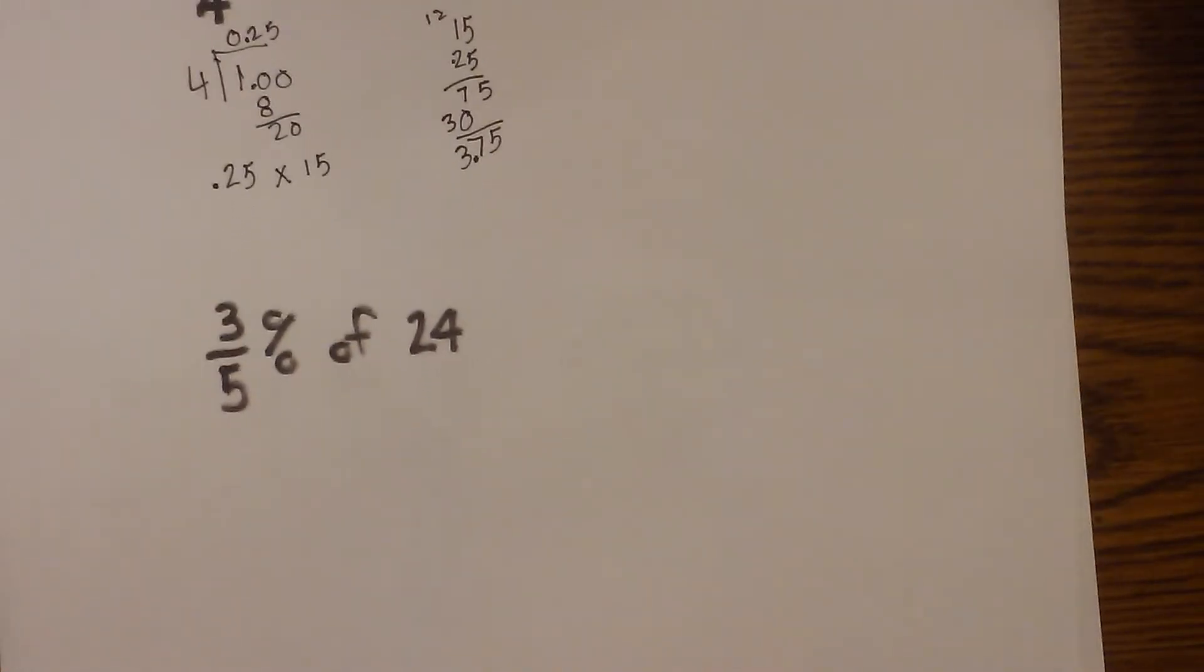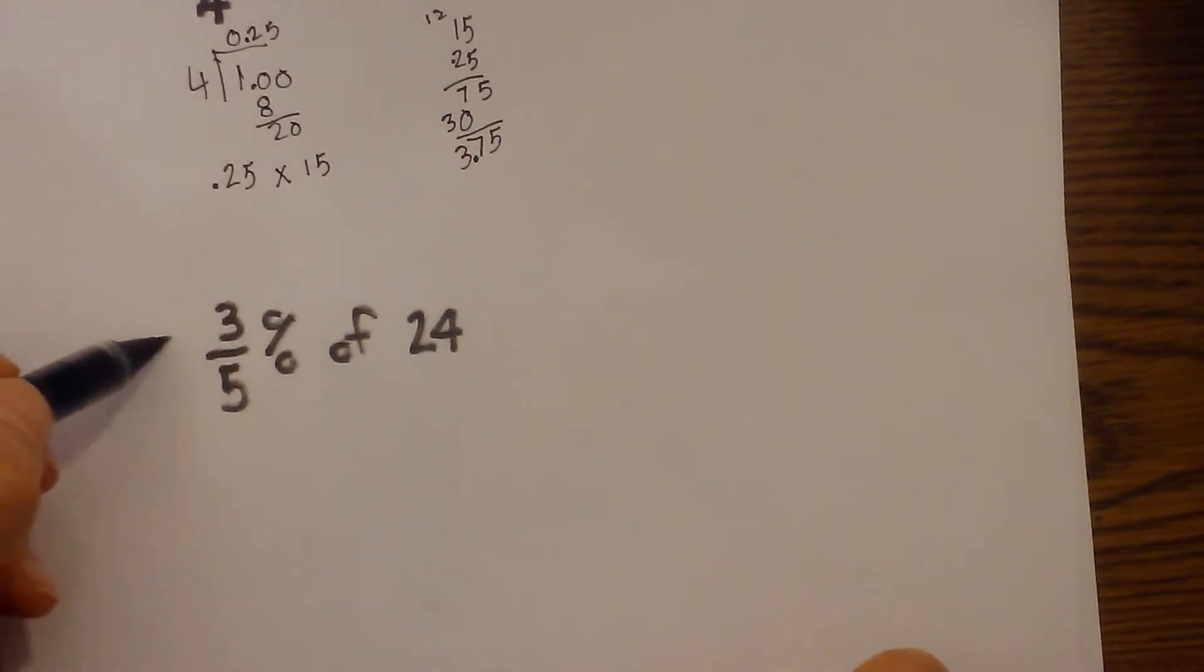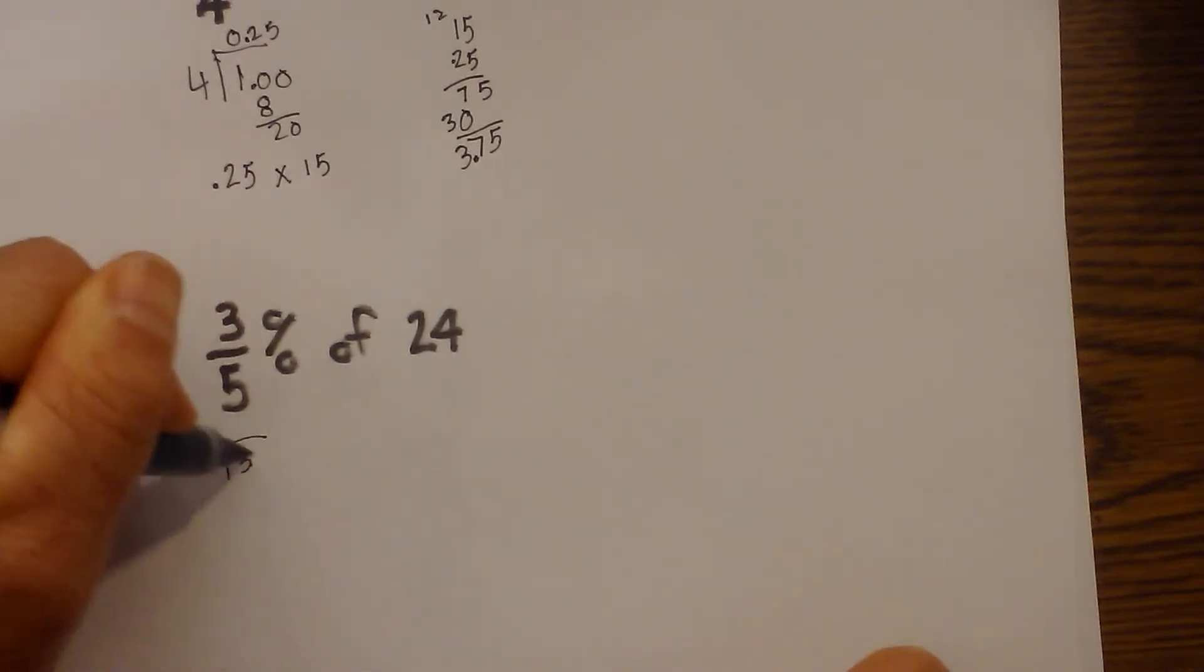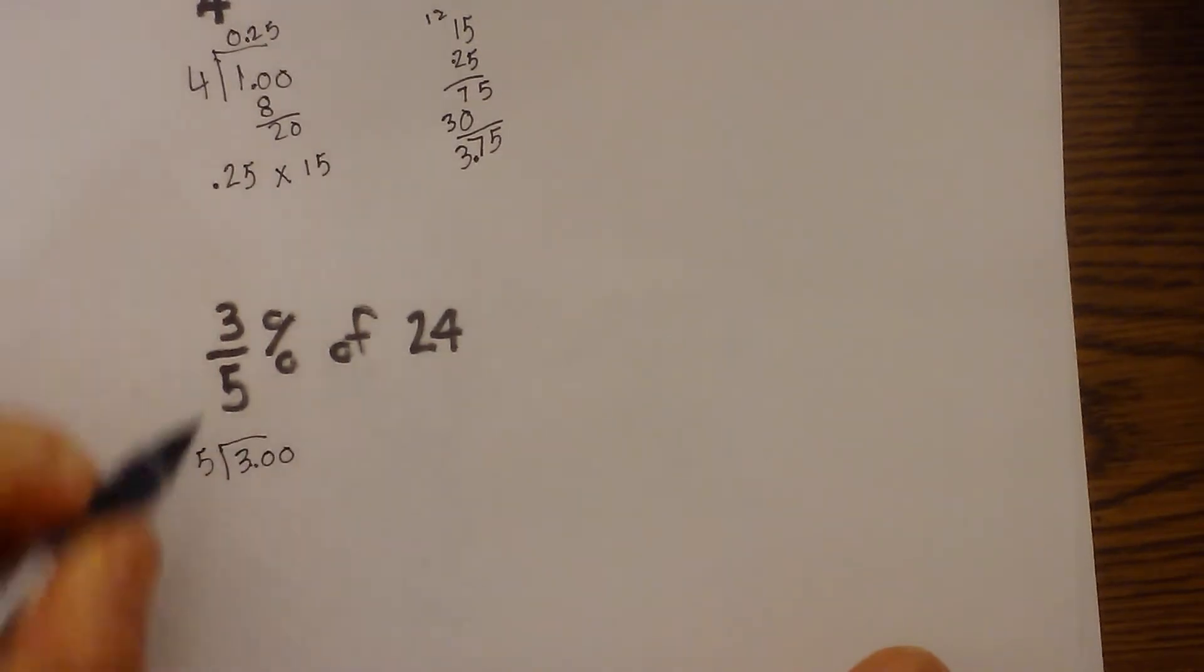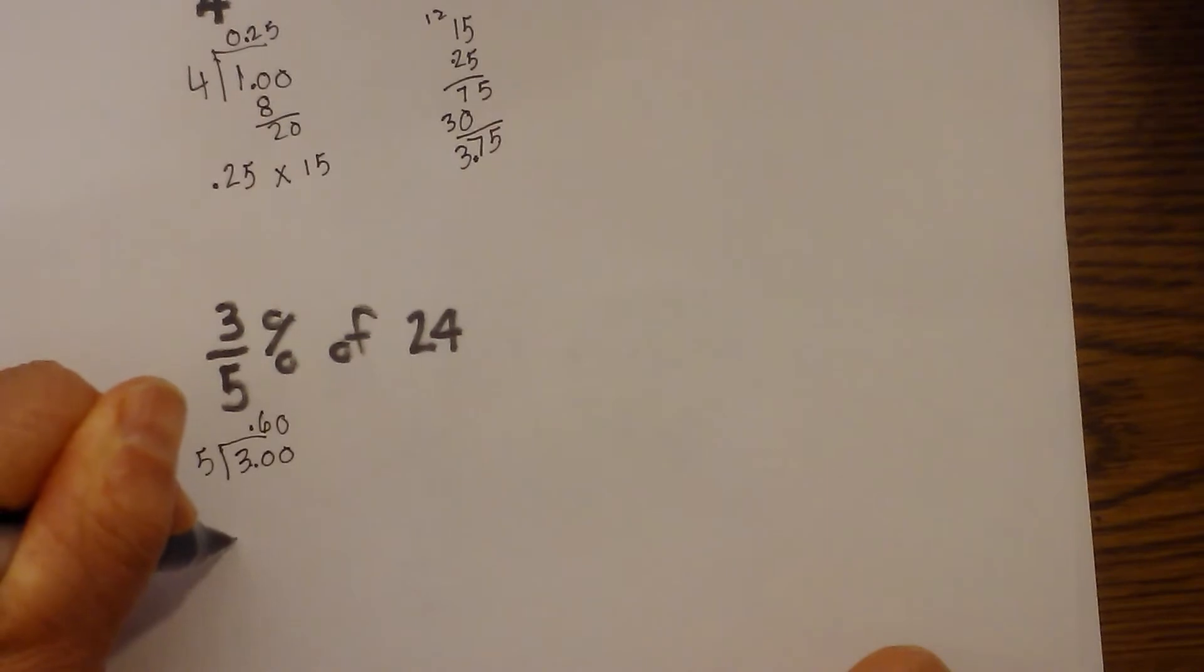Let's work one more, the same thing. I'm going to replace this percent with a decimal. So I'm going to take 3 divided by 5. 5 goes into 3 six times. Remember to move the decimal. Now just solve.